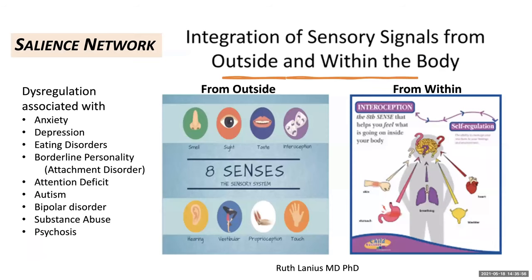Research has shown that dysfunction of the salience network is associated with many of our most severe emotional and behavioral problems. The salience network integrates sensory information from outside and within the body. On the left-hand side, you see a diagram of the eight senses: smell, sight, taste, hearing, balance, proprioception — knowing where you are in space — and touch. It also integrates interoception, a sense that helps you feel what's going on in your own body — stomach problems, breathing problems, bladder problems, palpitations, racing heart rate, and painful rash.